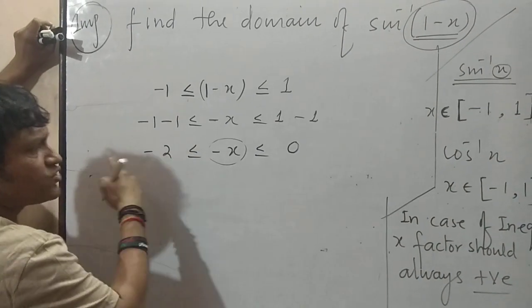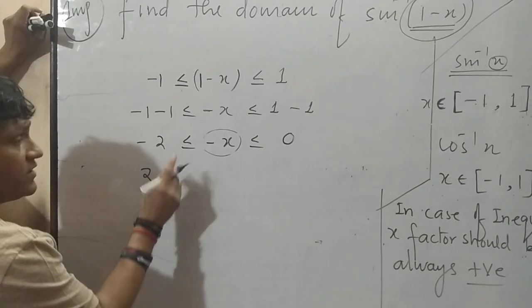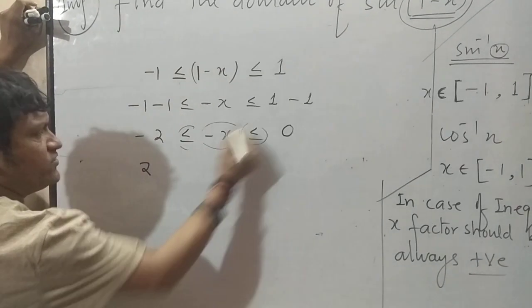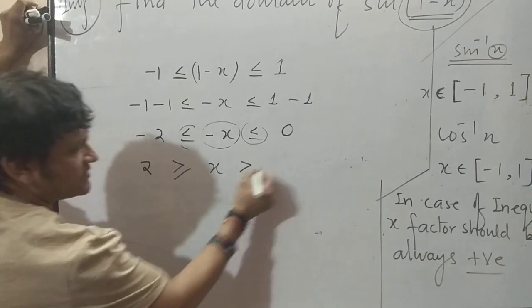So what you will do: here x is minus, so multiply by minus. It will become 2. When we multiply minus sign, inequality also will change. x, 0.